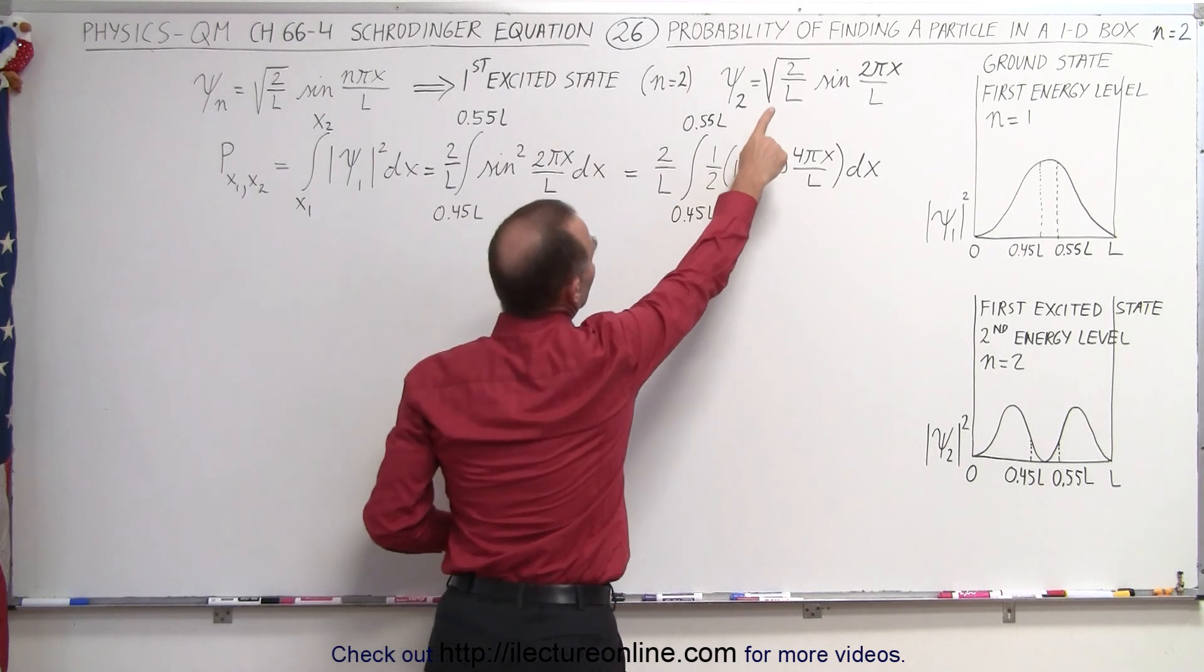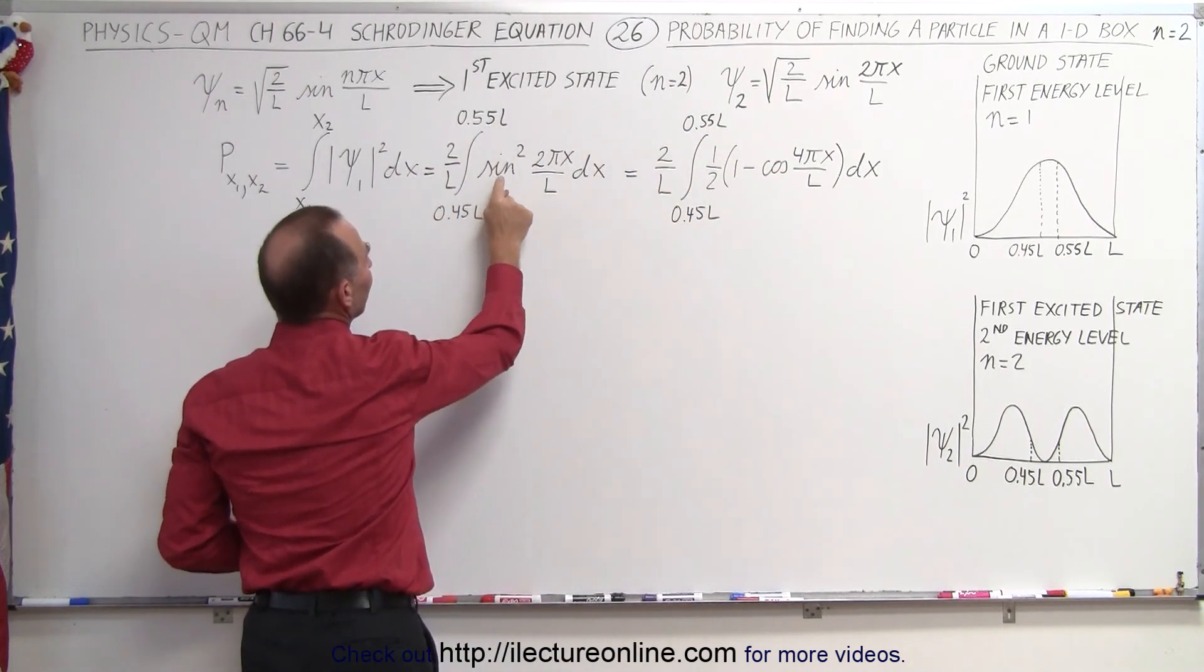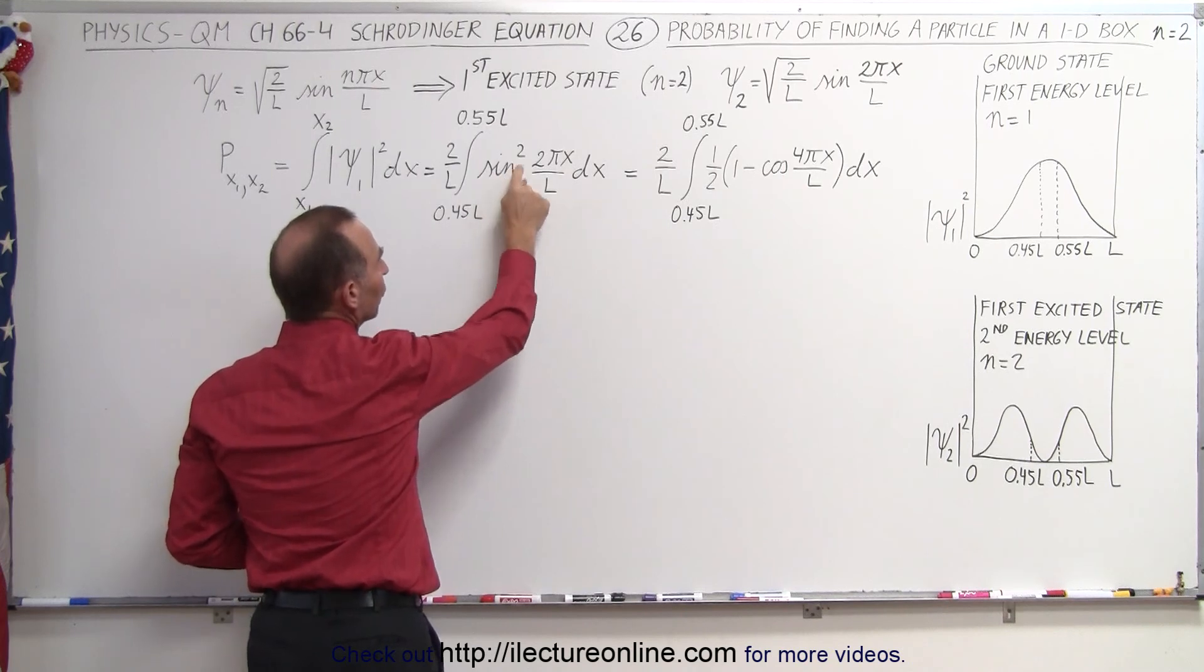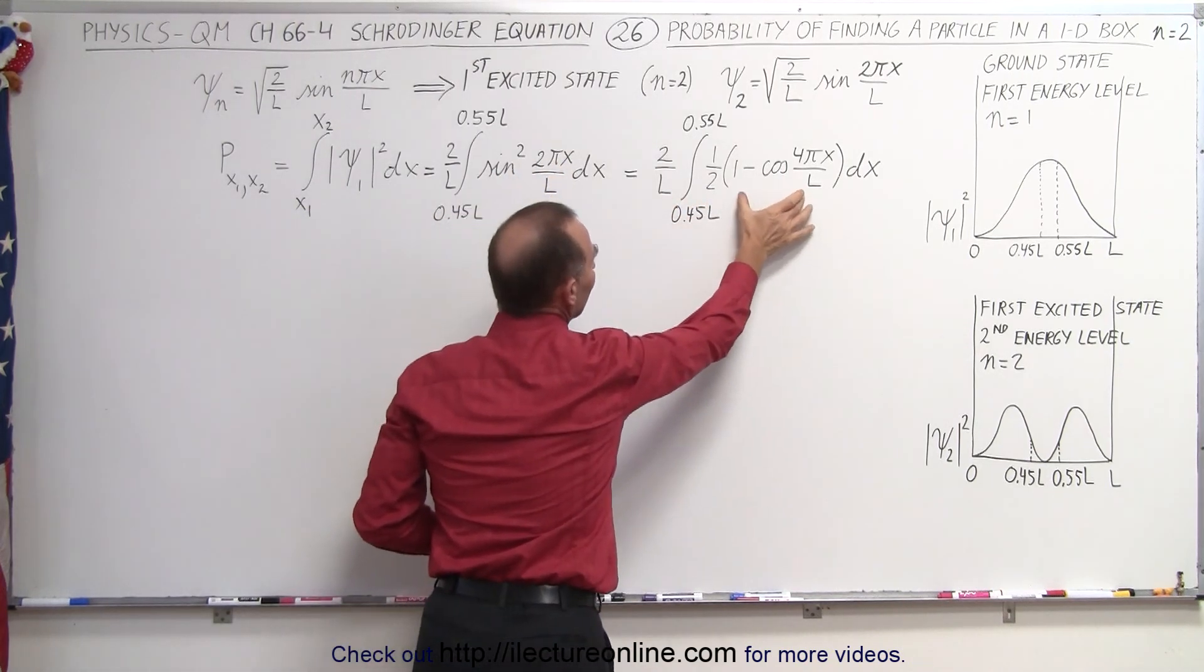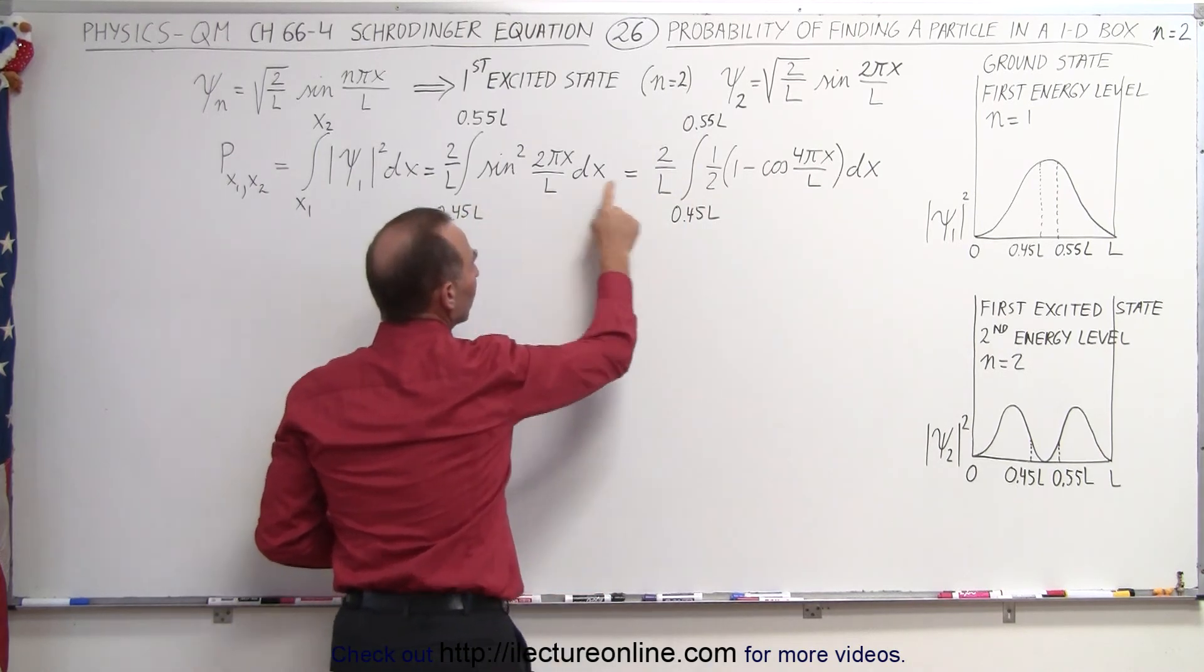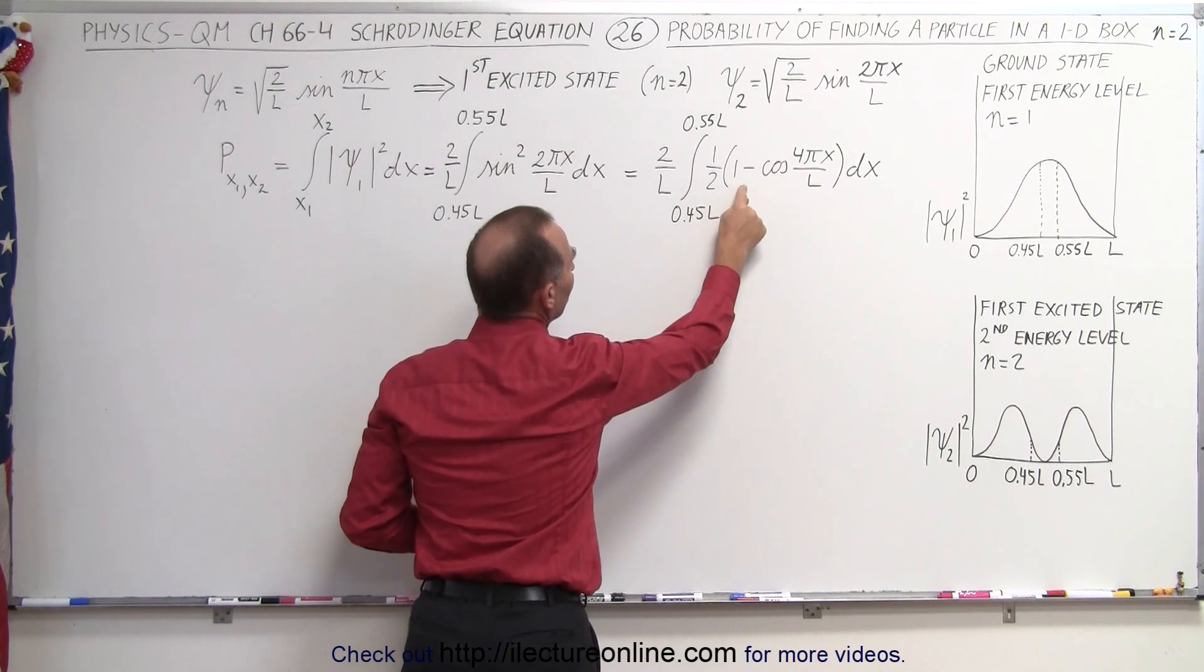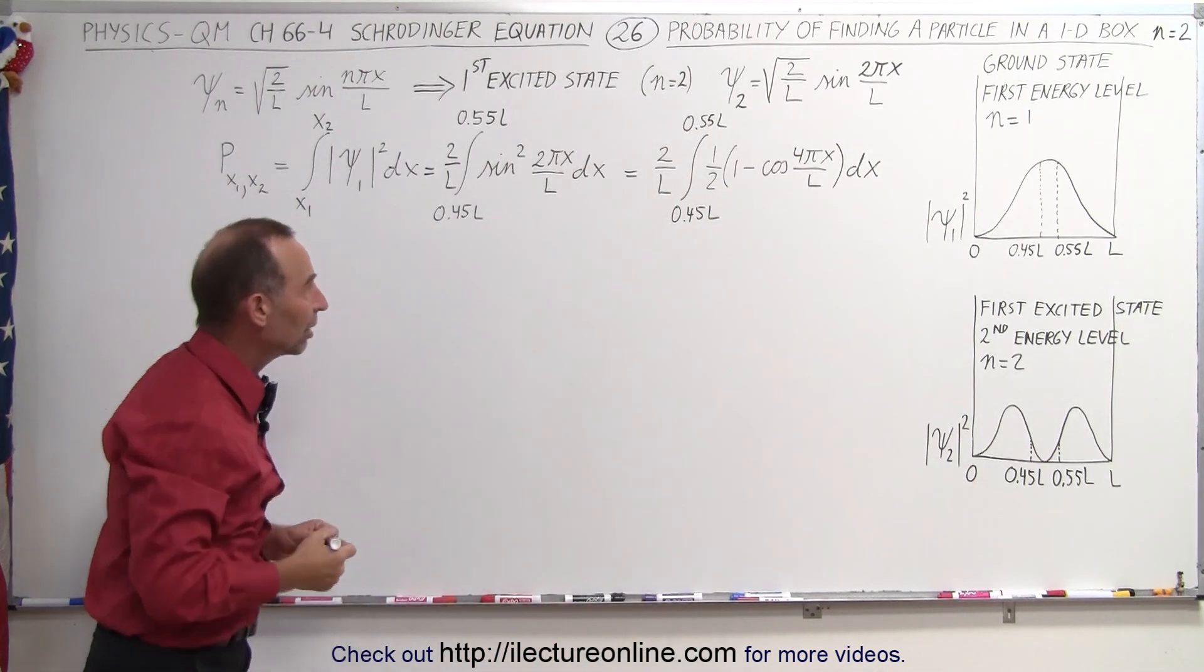So we factor out the square root of two over L quantity squared which is two over L. We get the sine squared of 2πx over L times dx and then we use the identity. Notice the identity for sine squared becomes one-half times the quantity one minus the cosine of twice the angle and that's why we have a four there instead of a two.